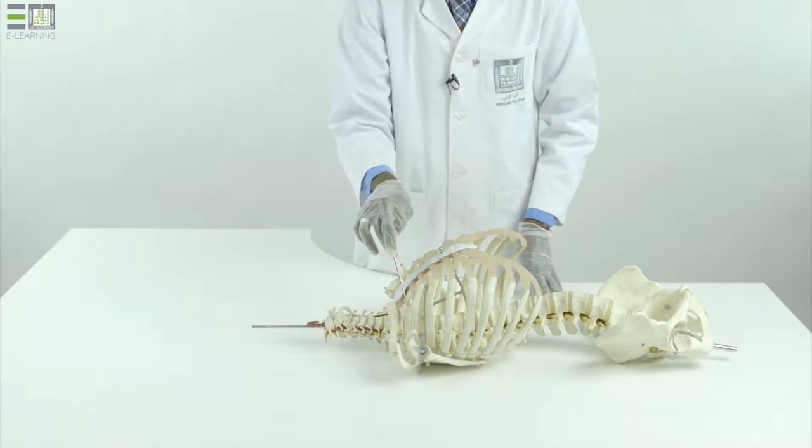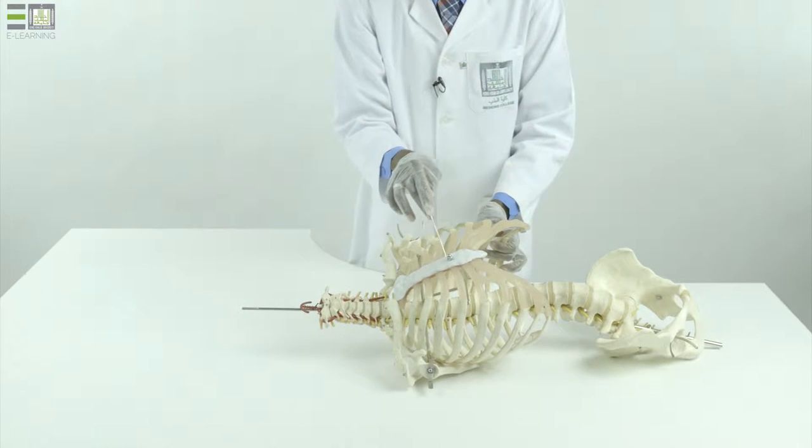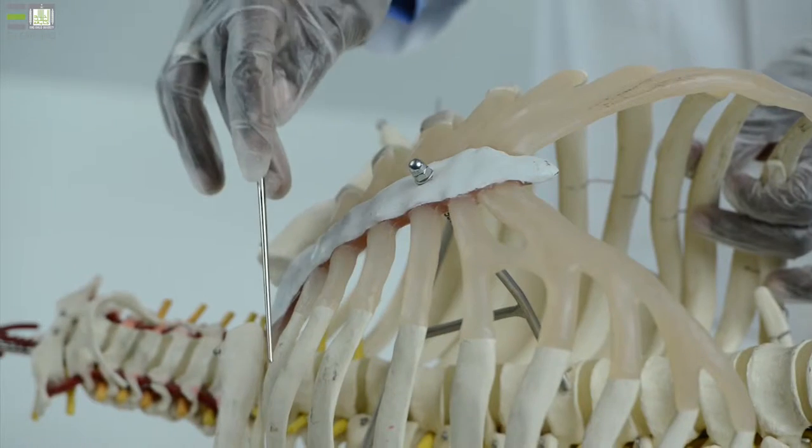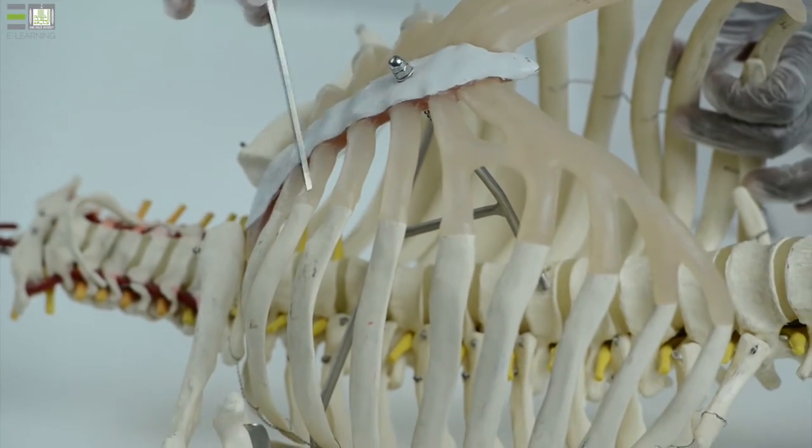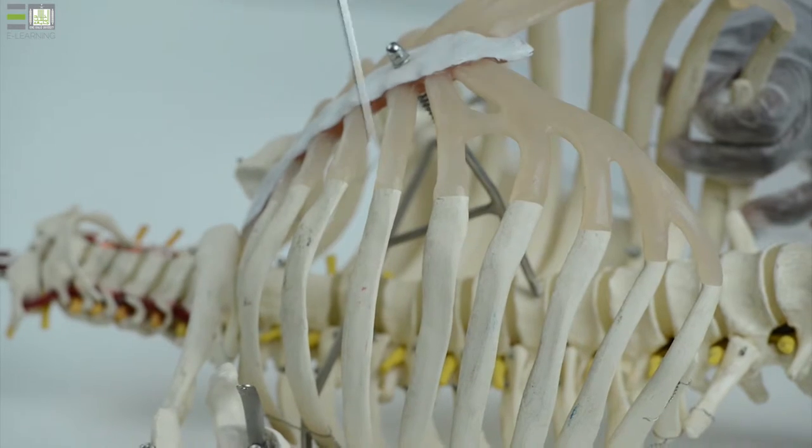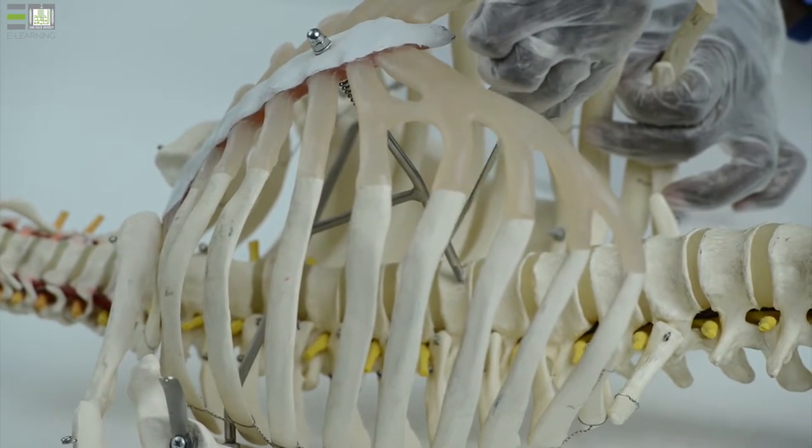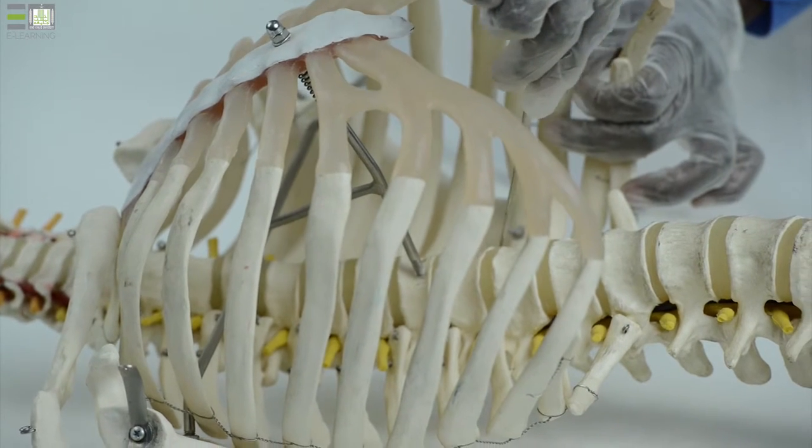This is the articulated thoracic cage: the sternum anteriorly, the ribs and their costal cartilages anterior-laterally, and the vertebrae which form the thoracic part of our vertebral column posteriorly.